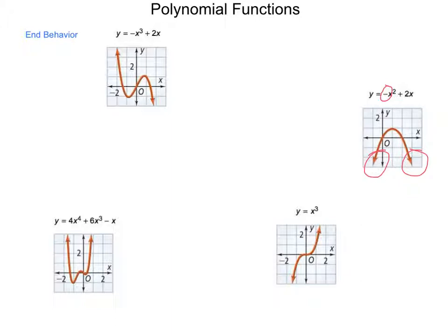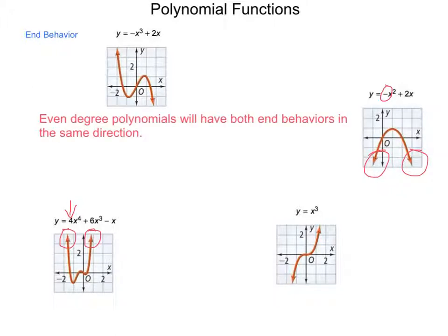However, this quartic, both ends are headed up. And you can see we have a positive lead coefficient. So, depending on what that lead coefficient is, even polynomials will have end behaviors in the same direction. And whether that be up or down really depends on whether it is a positive lead coefficient or a negative. And we've seen that.